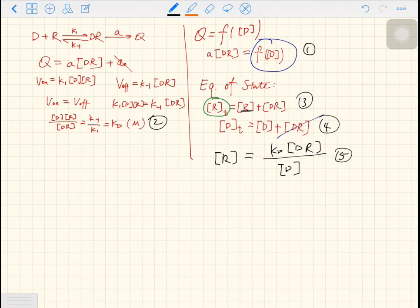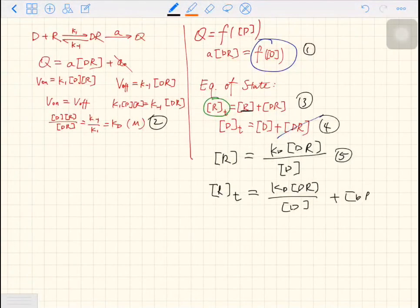Equation number five. So let's put equation number five into equation number three. We have RT, which is a constant, equals KD DR over D plus DR.